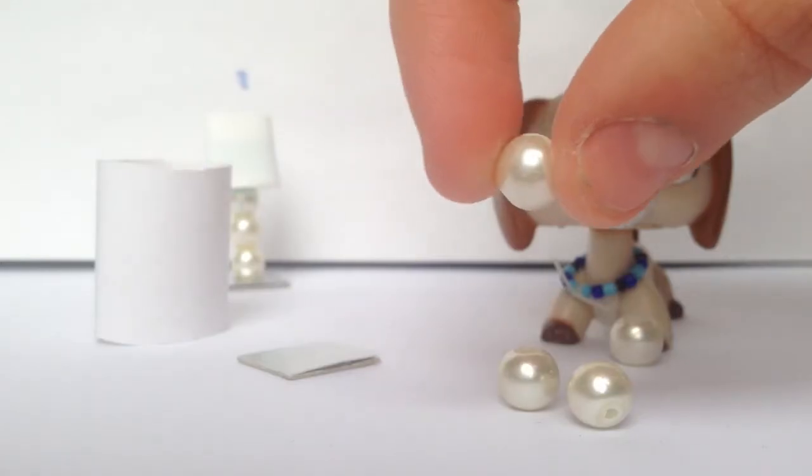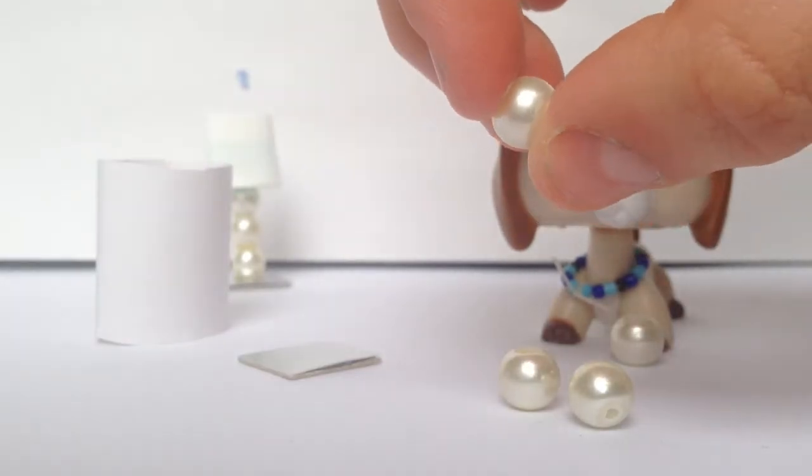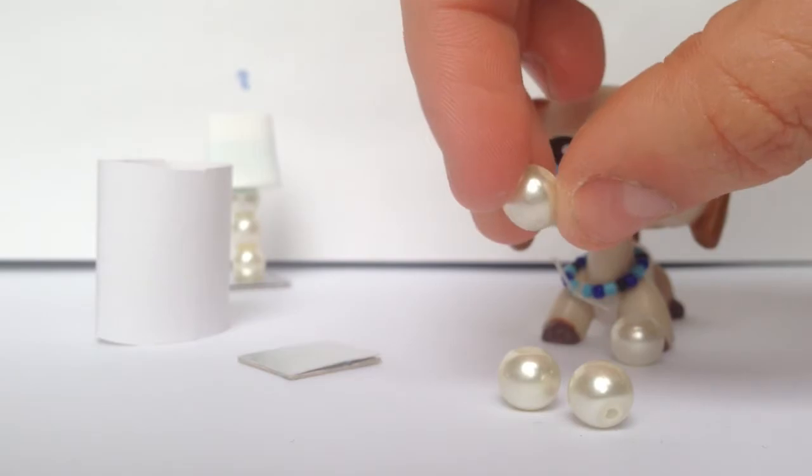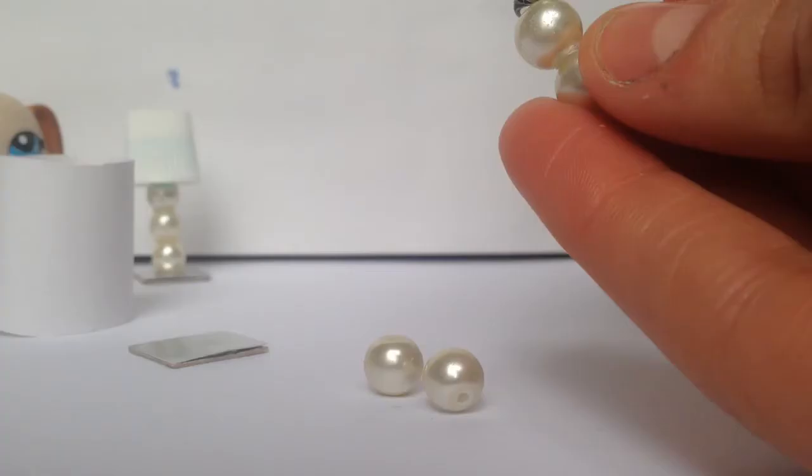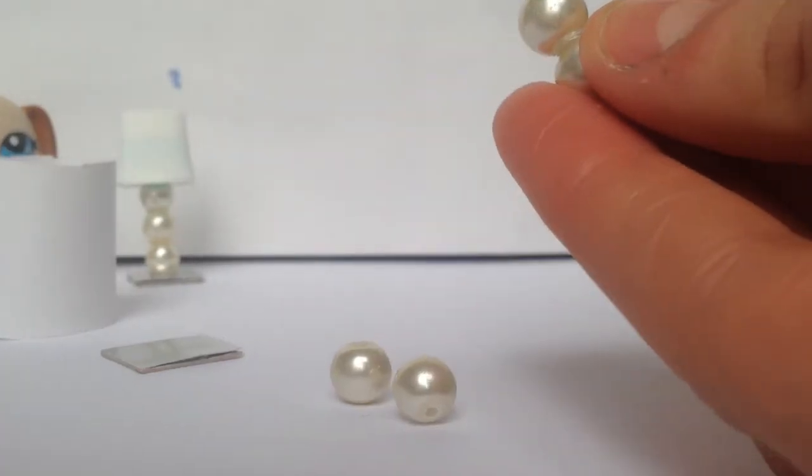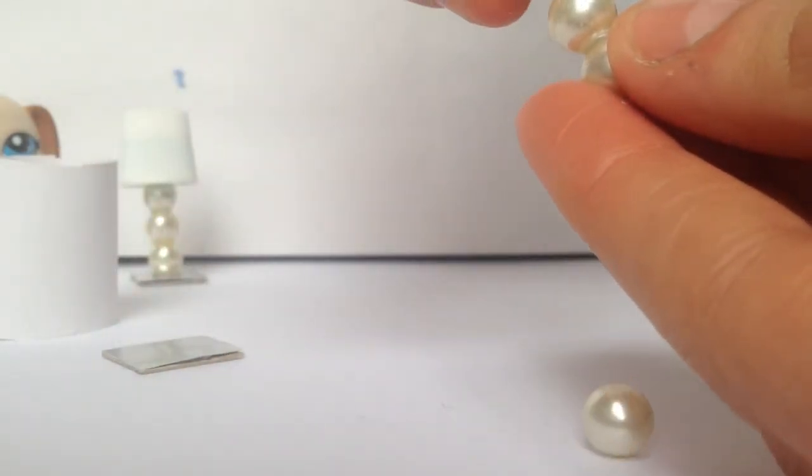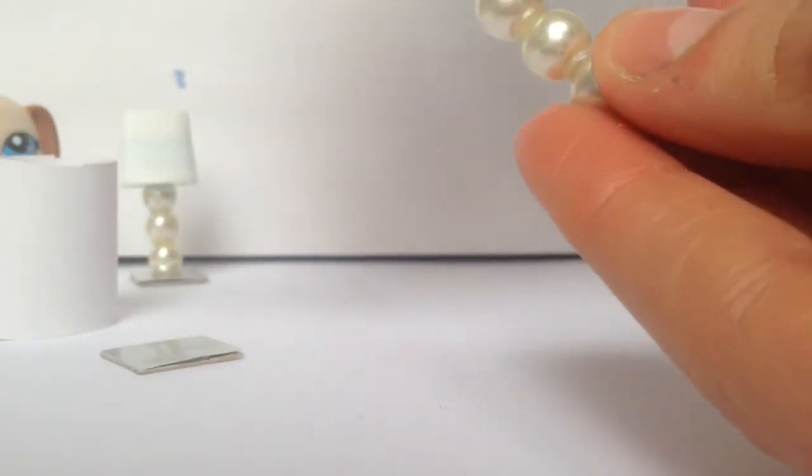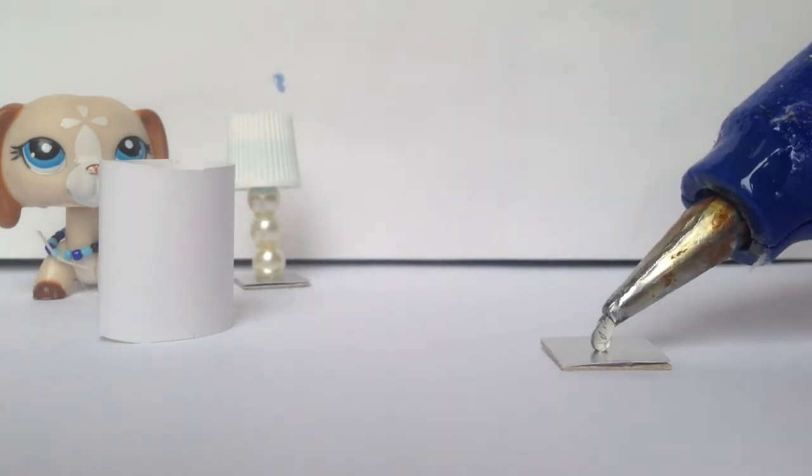Next, you're going to get four beads about this size. It really doesn't matter what color they are. Put a little bit of hot glue on one bead, a little bit of hot glue on your base, and place the beads.